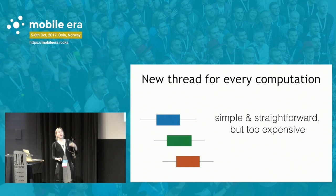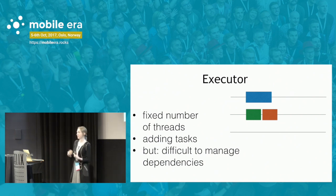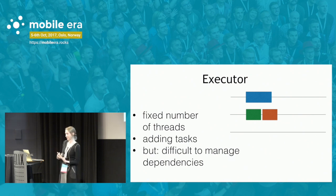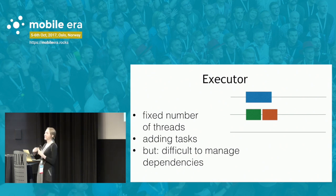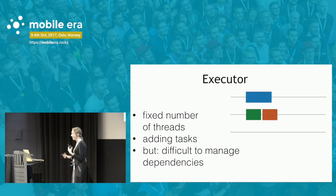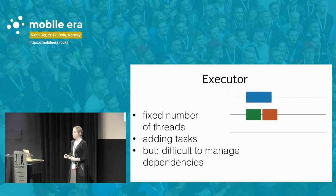Creating a new thread for every computation is too expensive — it is expensive to start a thread, create one, kill one, and create a new one. So instead we'd like to reuse threads. An executor has a fixed number of threads, manipulates them, and allows you to add and run new computations there. Now the number of computations can be much greater than the number of threads.